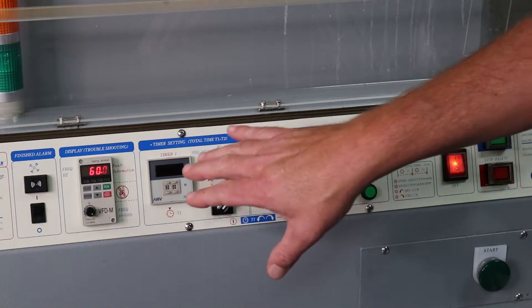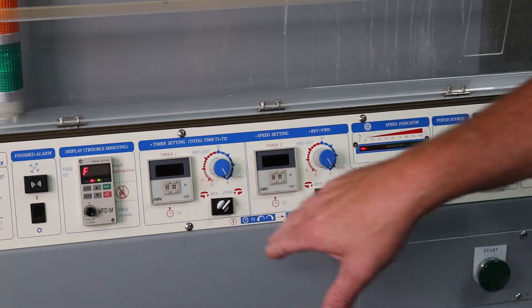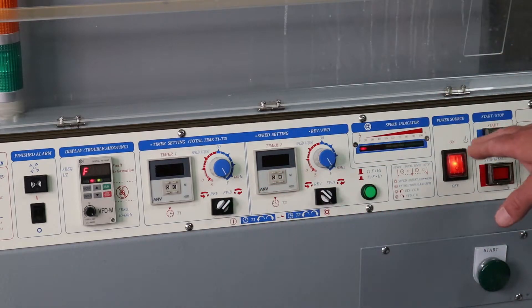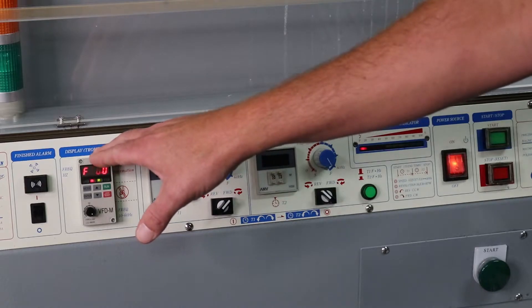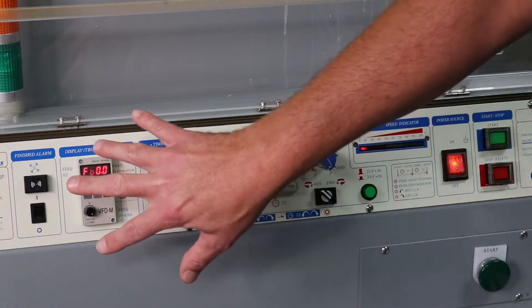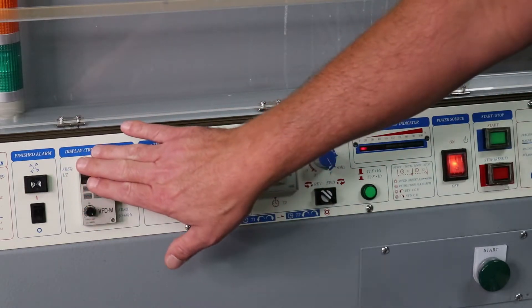They're all going to have the same timers, potentiometer, direction switch, as well as your start and your power source. This PLC here does not need to be touched. This is programmed and locked so you can just leave this alone.